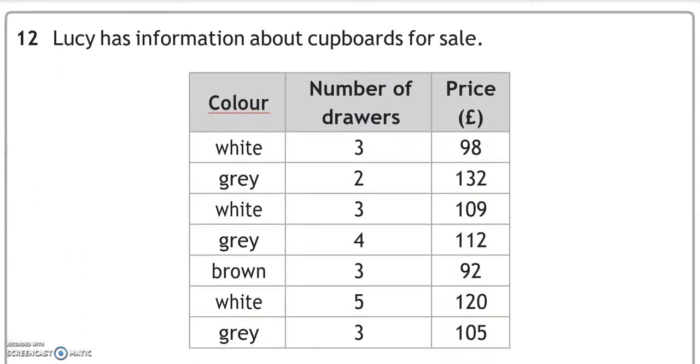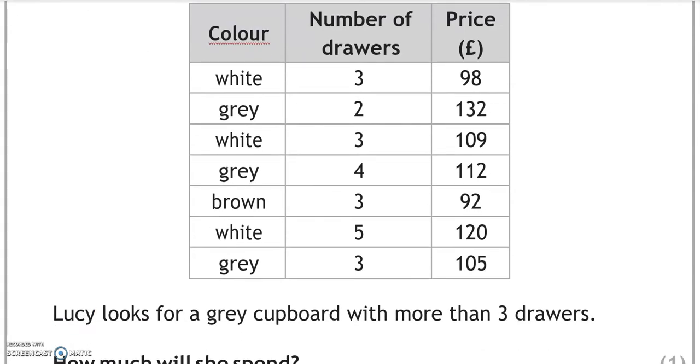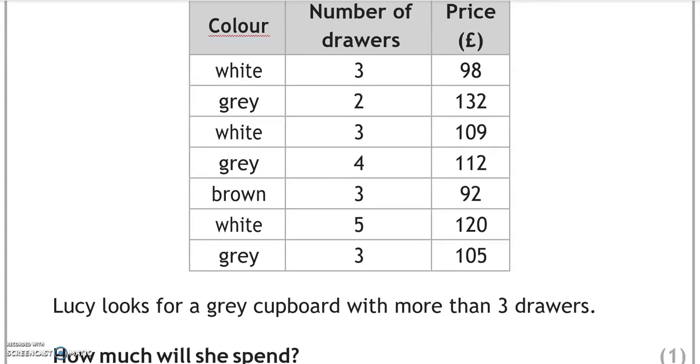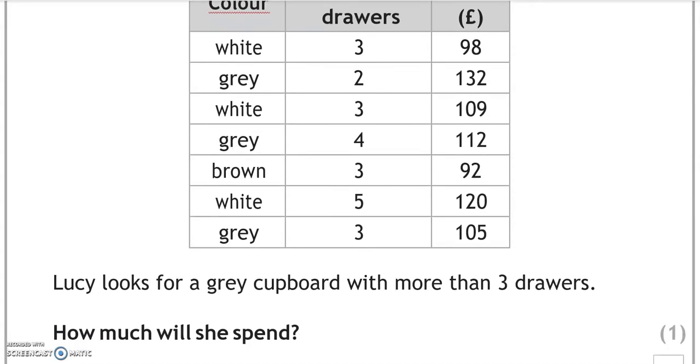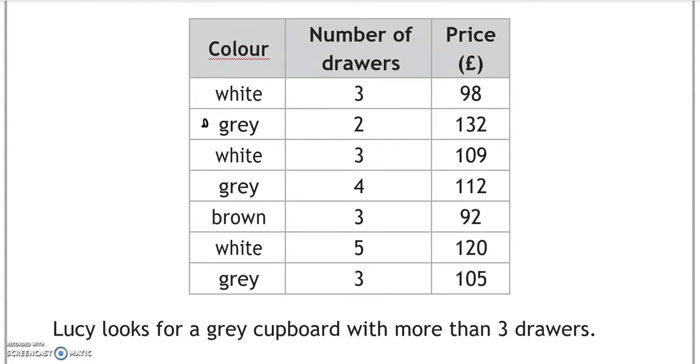Lucy has information about cupboards for sale. Lucy looks for a grey cupboard with more than three drawers. How much will she spend? So grey, it's either this one or this one or this one. With more than three drawers, so it's going to have to be this one which has four, so one hundred and twelve pounds.